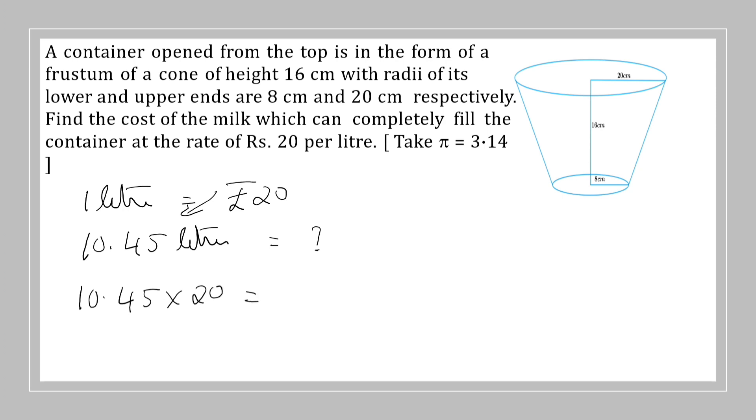That equals: 0, 2 fives are 10, 2 fours are 8, 1, 9, 2 zeros are 0, 2 ones are 2. How many decimal places? This much rupees.